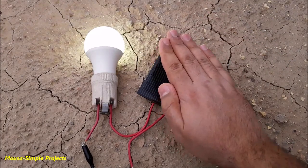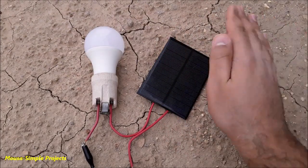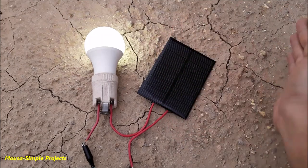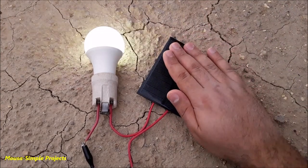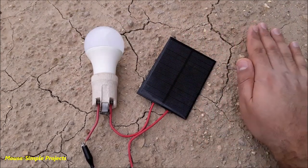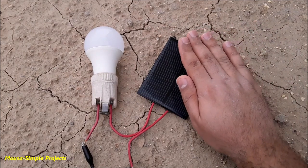In this video, I'm going to show you how to make an automatic dark switch or photo cell using a solar panel. It can switch on your lamps at night and switch them off during the daytime automatically.